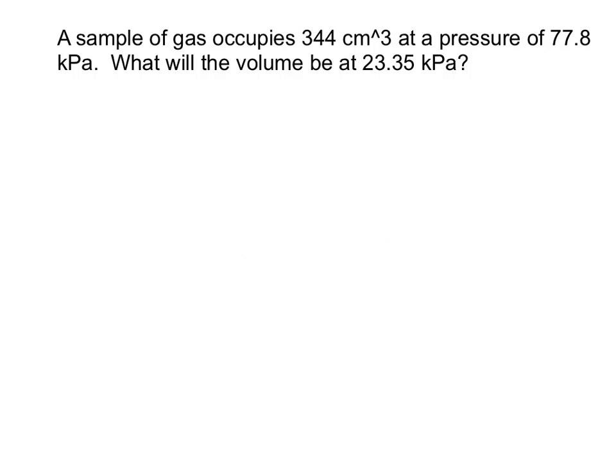Well, we always set this up by defining what our variables are. So in our first situation, we have a sample of gas that is occupying 344 centimeters cubed, and that's a volume. So I'll write down V1 as being 344 centimeters cubed. I know it's a volume because of that centimeters cubed value. Also, it's saying it occupies or takes up that much space.